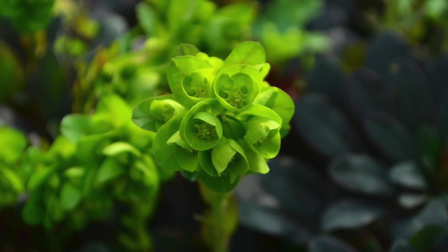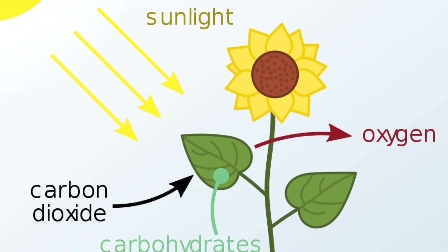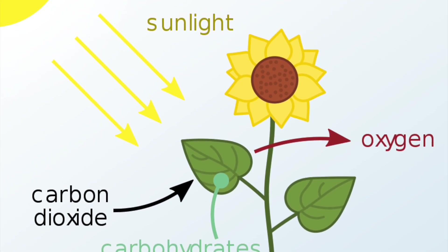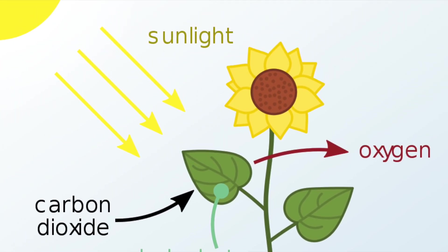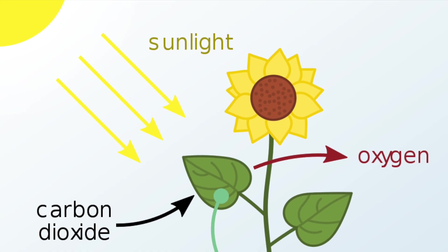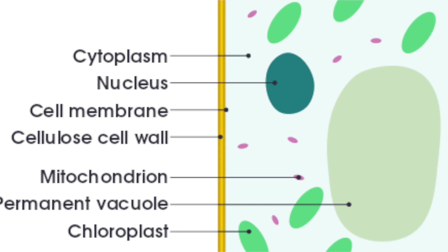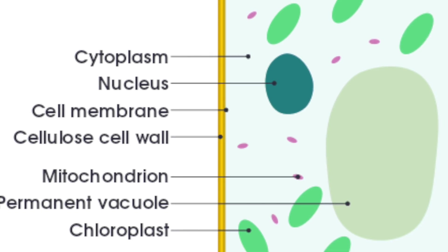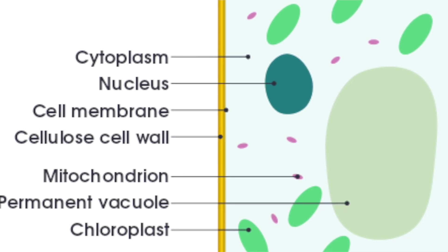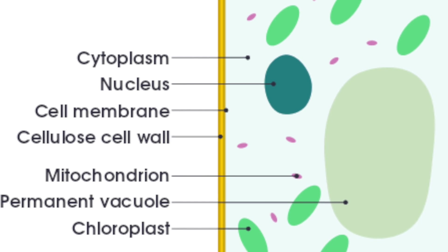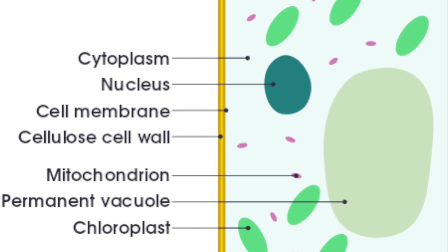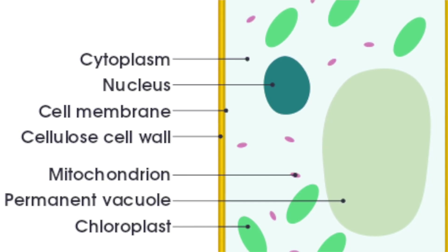Plant cells also have different organelles because they can make their own food through photosynthesis. Plants contain all of the same features as an animal cell, but they also contain a few other features. The main one is the cell wall, which is made of cellulose, and this strengthens the cell and gives it support.